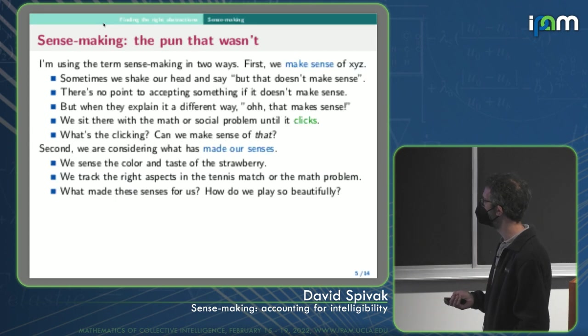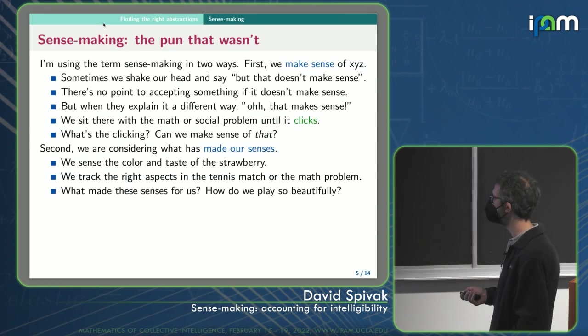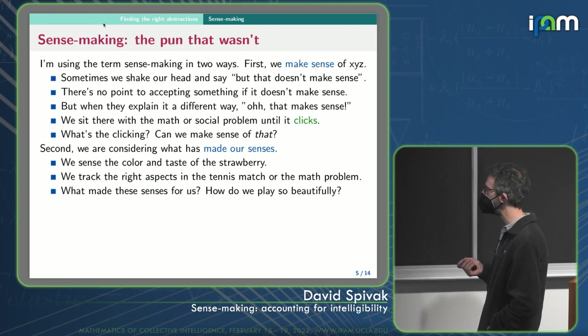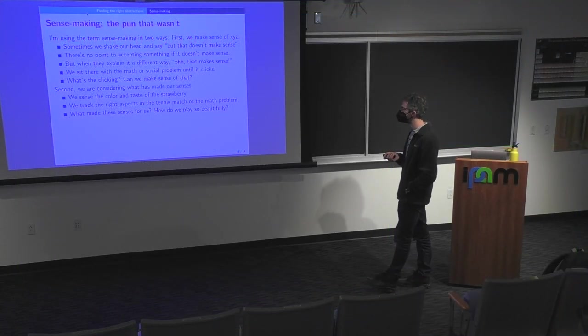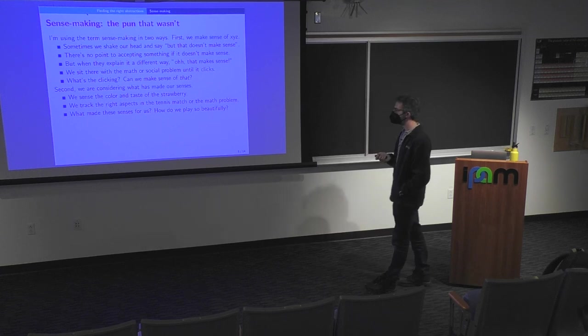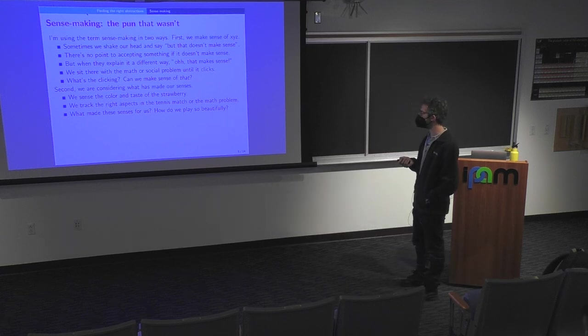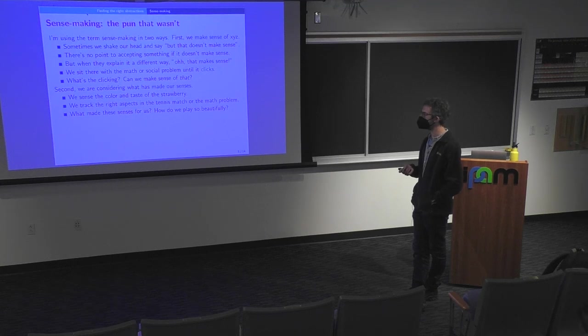So what is that clicking into place? But then the second way of using the word sense is that something has made our senses. Like, we have evolved. And so our ability to sense the color and taste of the strawberry, to track the right aspect of the tennis match or math problem, something made those senses for us in the past.